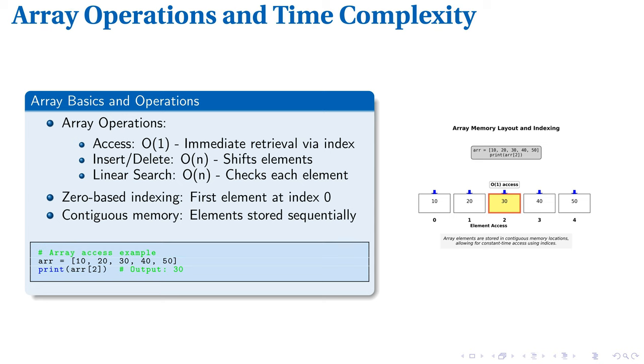Arrays store data efficiently in memory. Accessing elements is lightning fast, taking constant time O(1) regardless of array size. This speed comes from contiguous memory storage, where elements sit side by side. However, inserting or deleting elements can be costly, potentially requiring O(n) time as other elements shift.